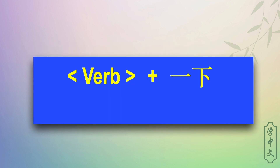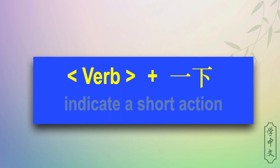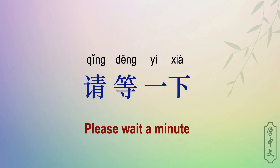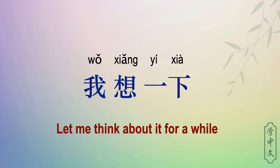一下 is placed after a verb to indicate a short action. Chinese people like to use it very much. For example, 请等一下 — please wait a minute. 我想一下 — let me think about it for a while.